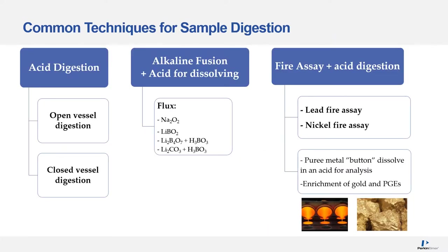A wide variety of digestion methods have been developed to deal with geochemical samples. The most common preparation methods include acid digestion, alkali fusion digestion, and fire assay digestion. Acid digestion includes both open and closed vessel digestion. Alkali fusion methods are particularly good for digesting samples containing aluminium and silicon. Precious metal samples are generally prepared using fire assay methods, either using a lead or nickel fire assay. It is a pre-concentration method where the precious metals are separated from the matrix.